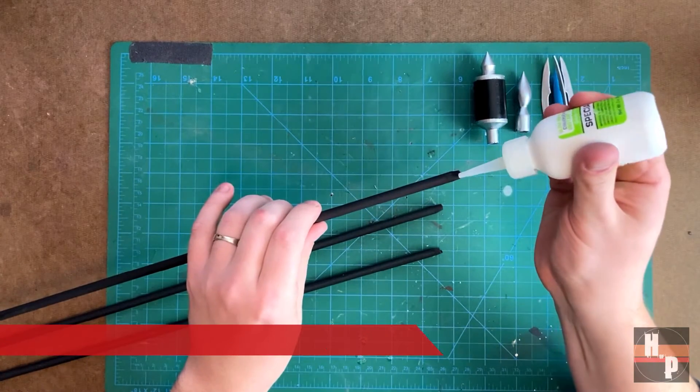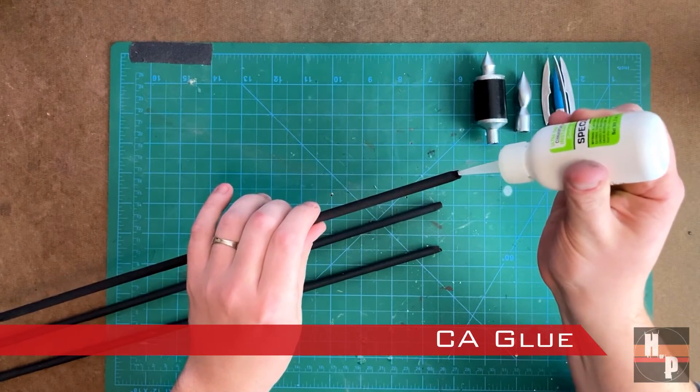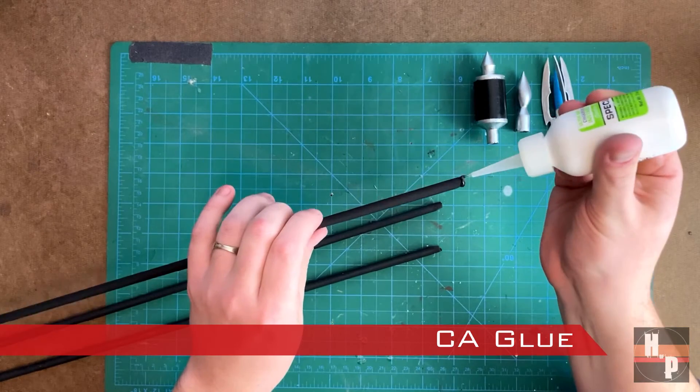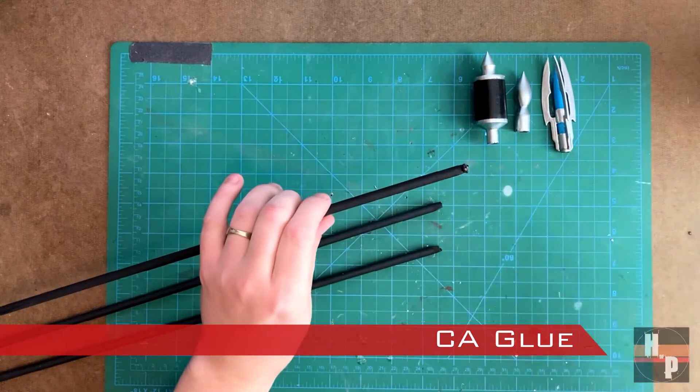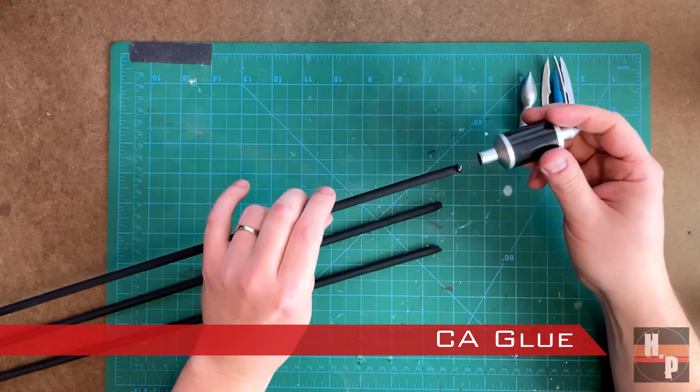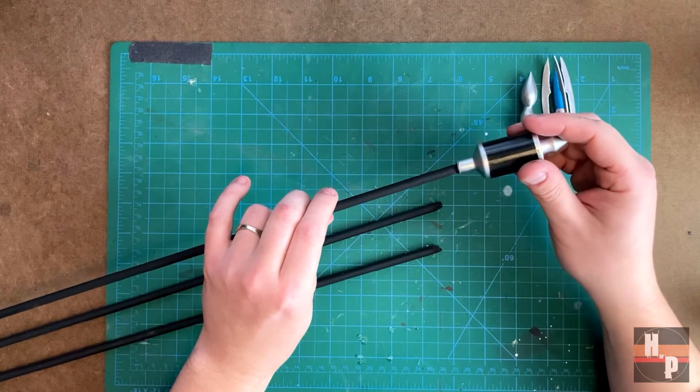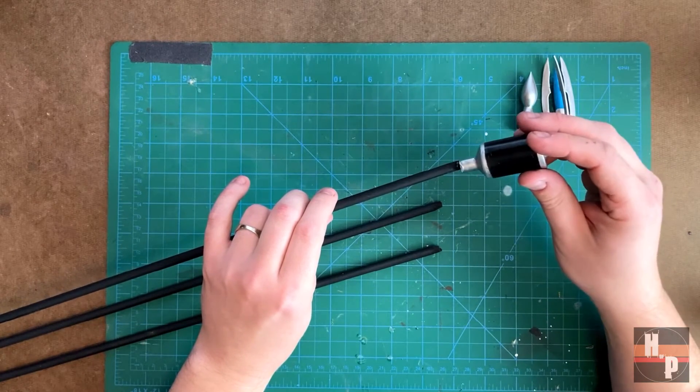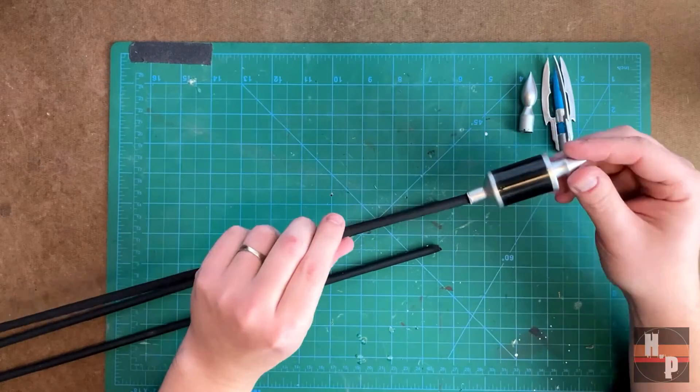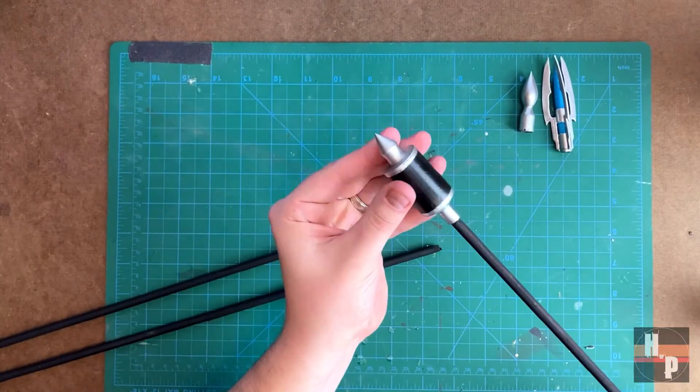To attach the tips, I used CA glue. Make sure to align the tip onto the shaft correctly before setting the glue with Zip Kicker.